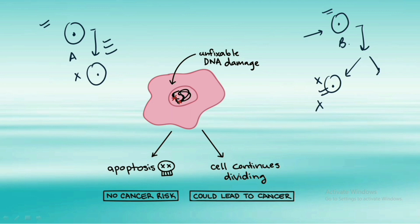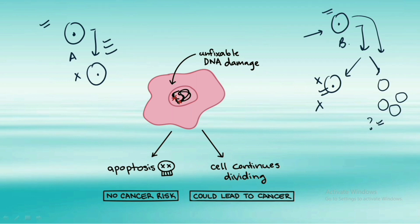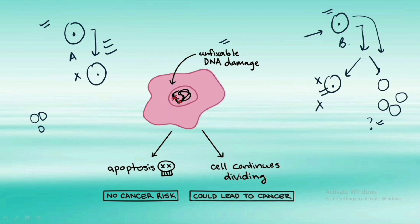But if there is DNA damage and this cell continues to divide in the body, this could lead to a cancerous situation. Cancer in simple words means uncontrollable growth or division of cells in the body. So if a cell has some unfixable DNA damage and undergoes apoptosis, the body gets rid of it with no cancer risk. But if the cell continues to divide, it could lead to cancer.